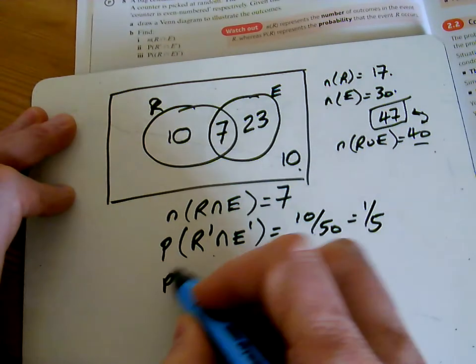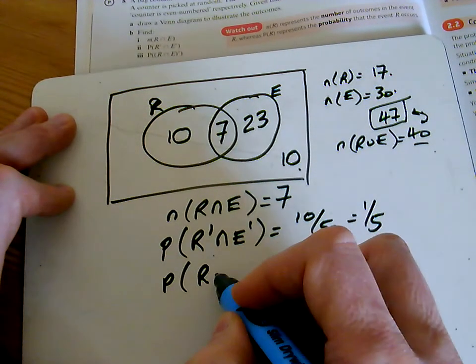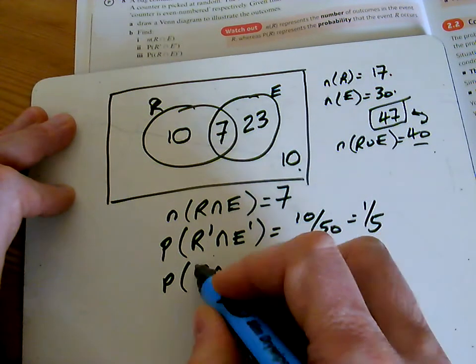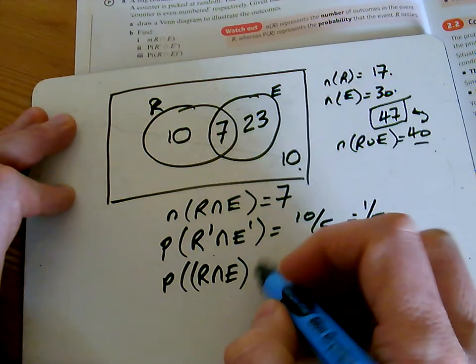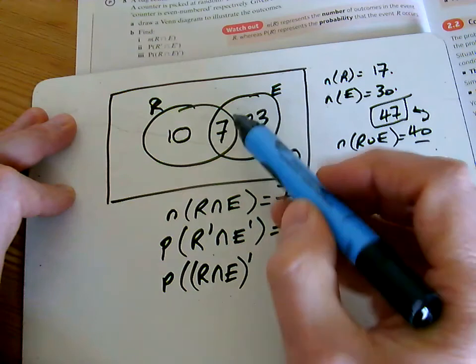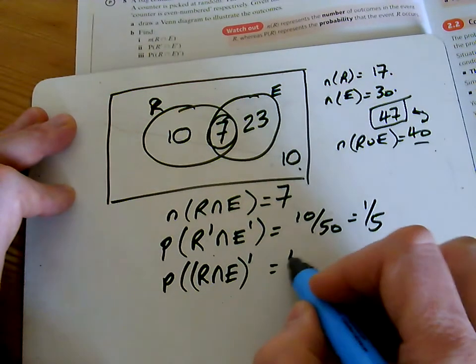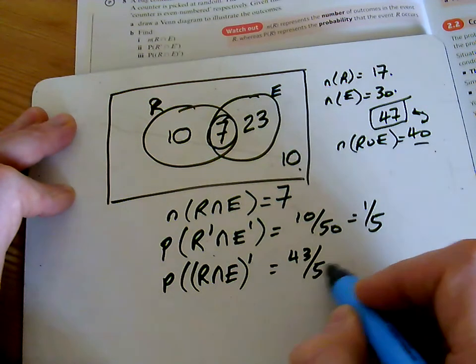And the last question, we want the... oh, there's a couple of nots there, isn't there? So first, it's the probability of not being in the intersection of them. So the intersection of them is 7. What's not in the 7 is the other ones. So that's 43 out of 50.